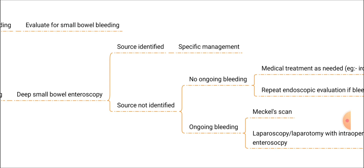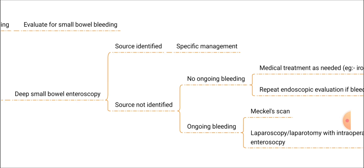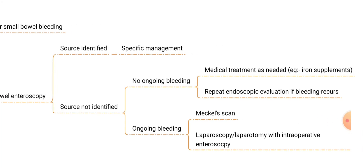Enteroscopy is a different endoscopy procedure which allows better visualization of the small bowel. This is the place for enteroscopy in PR bleeding. If any source is identified in the enteroscopy, we can do specific management. If no source is identified and the patient does not have any ongoing bleeding after enteroscopy, we can do medical treatment such as iron supplements, and if bleeding recurs, we can do repeat endoscopic evaluation.